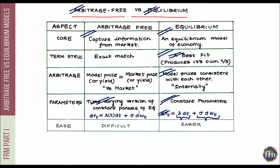Let's move to the ease of constructing and calibrating each category of models. An equilibrium model is relatively easier to construct and calibrate, while the arbitrage-free model is relatively difficult. This is because an arbitrage-free model intends to exactly match what the market is doing, which becomes more of a problem with multi-factor models. Equilibrium models are a touch easier to deal with because they don't intend to calibrate to the entire term structure.